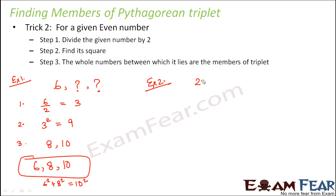Let's take another example. Let's say you are given a number 22 and you have to find out the remaining two members. Step number 1. Divide 22 by 2 which gives you 11. Step number 2. Square 11 that is 121. Step number 3. 121 is located between which two numbers? 120 and 122. Therefore 22, 120 and 122. This forms a Pythagorean triplet.